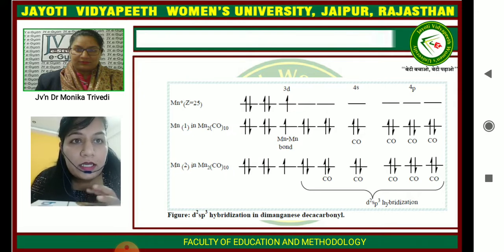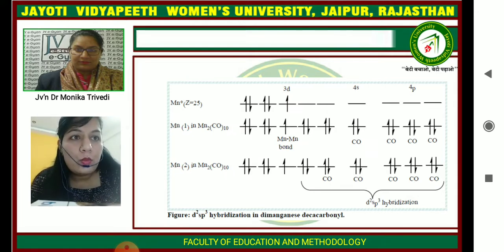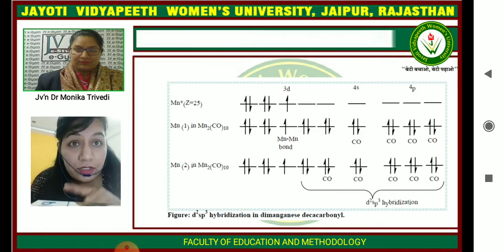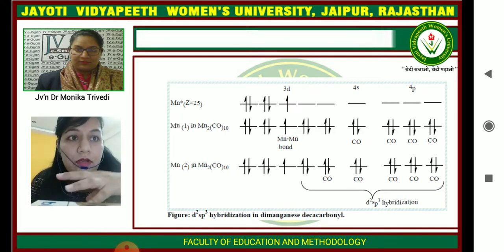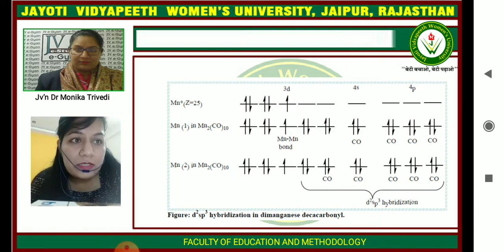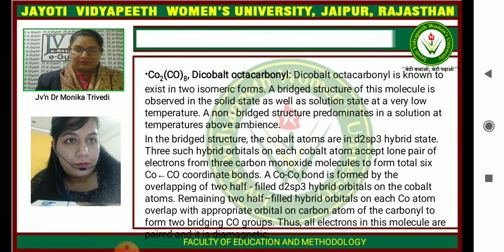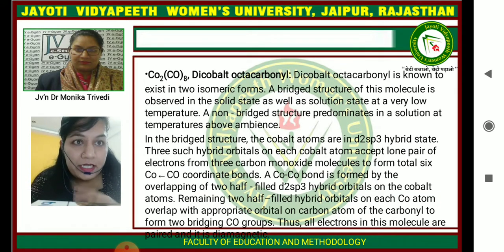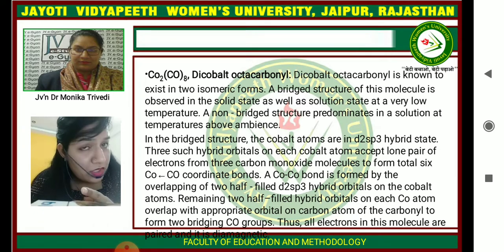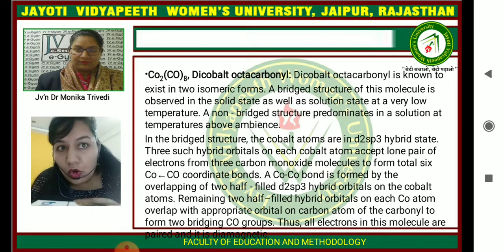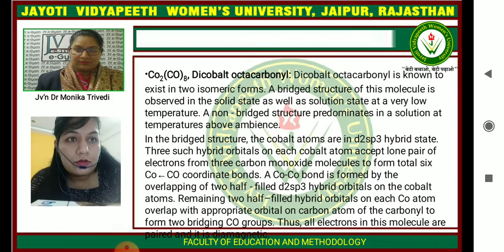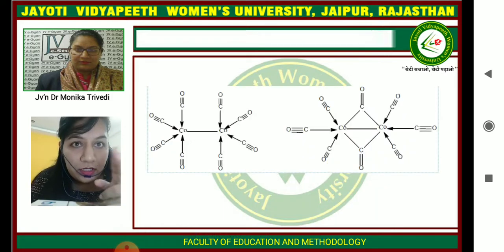When Mn is in the ground state and moves to the excited state, it has five empty orbitals available to combine with the CO ligand, giving d2sp3 hybridization for Mn2(CO)10. Next is Co2(CO)8, also a polynuclear carbonyl. It has two kinds of bonds: a Co-Co metal-metal bond and a Co-CO ligand bond, and it also shows a bridging structure.